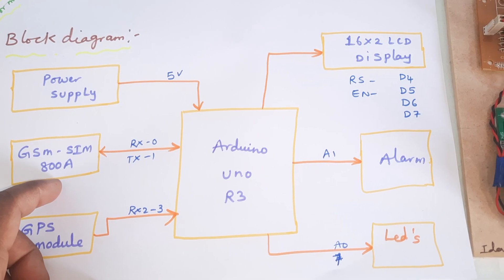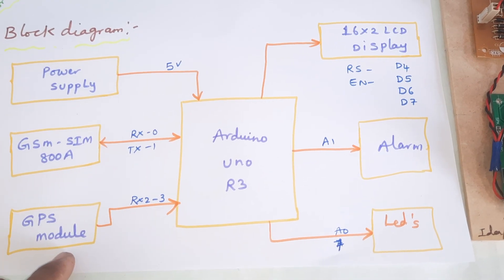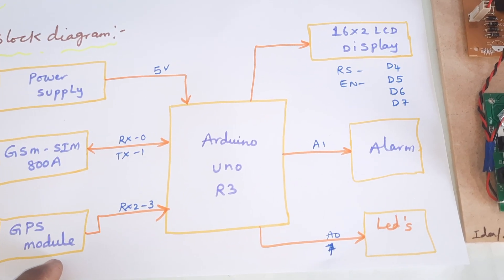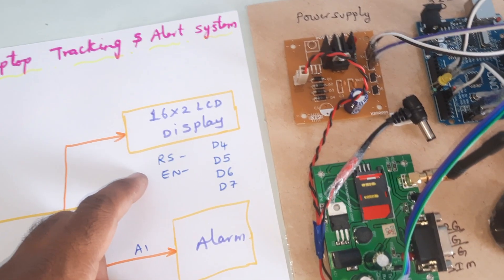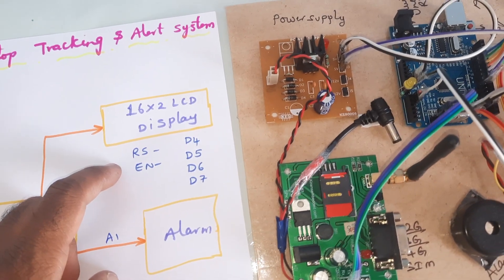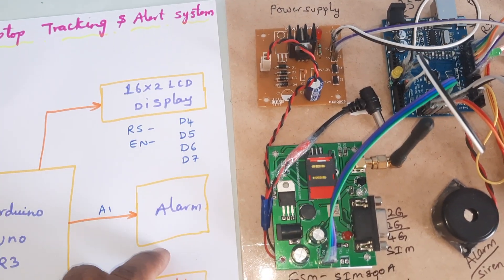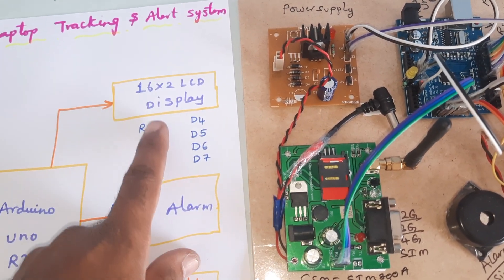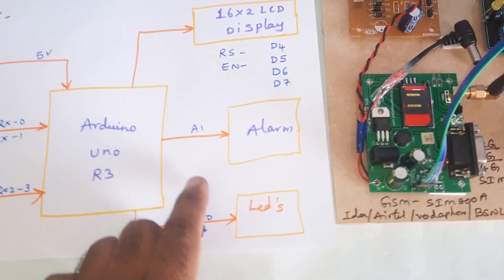The GSM is connected to RX/TX pins 0 and 1. The GPS is connected to RX2. The 16x2 LCD display is connected with RS, Enable, D4, D5, D6, D7 on pins 8, 9, 10, 11, A1, and an LED.